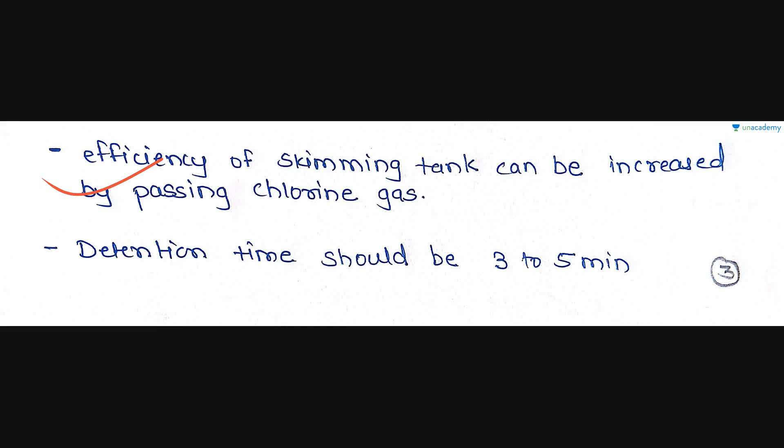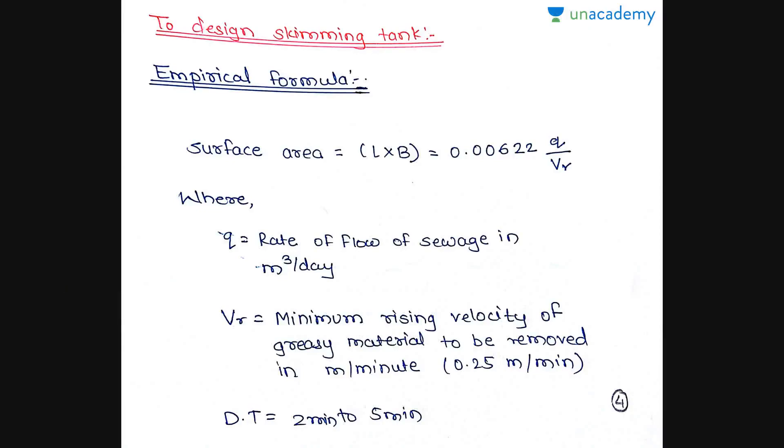Adding chlorine increases the efficiency of the Skimming Tank by 3 to 4 times, making it very effective. The detention time should be 2 minutes to 5 minutes.